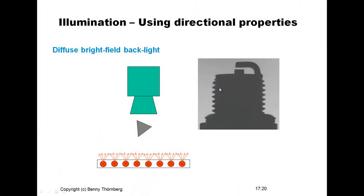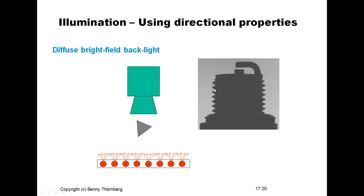There is a certain variation in the grayscale close to the silhouette, near the edges, which arises from light coming from different directions on the sides of the threads. Thinking further, what if we could create an illumination source radiating in only one direction — then we might get rid of this grayscale variation and achieve a sharper silhouette image of the thread.